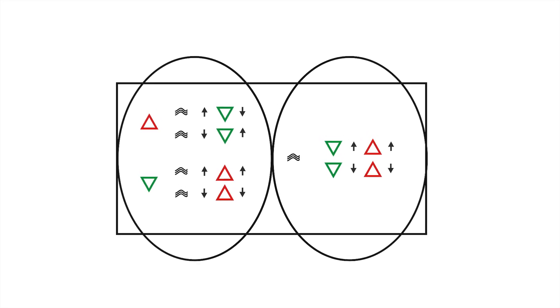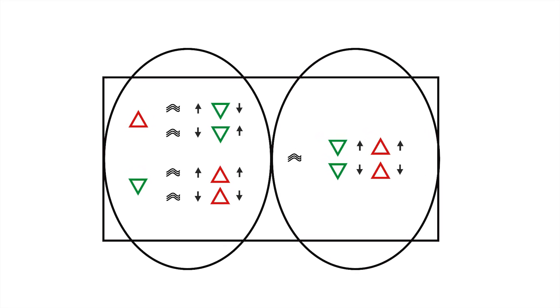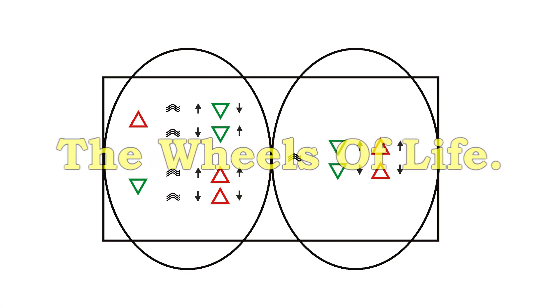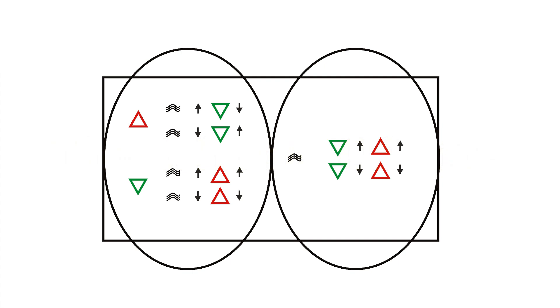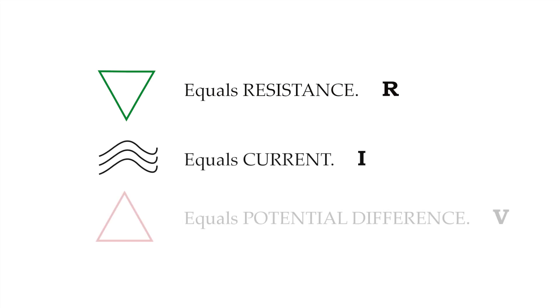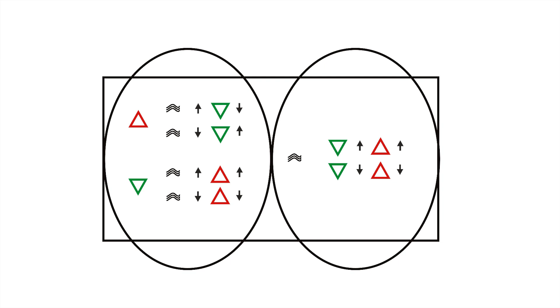To make Ohm's Law simpler to understand, in the Become the Light Encyclopedia of Books, we created a visual code to explain how it works. We call this visual code the Wheels of Life. You will find here a quick review of Ohm's Law, after which we will demonstrate the same results of the formula hidden within the image on the Tablet. The triangle pointing down equals resistance, the three waves equal current, and the triangle pointing up equals potential difference. This section is the only thing you must memorize — know it forward and backward. It is the foundation of everything.